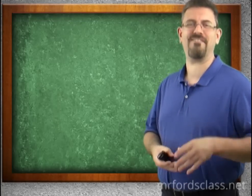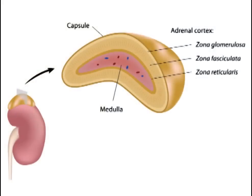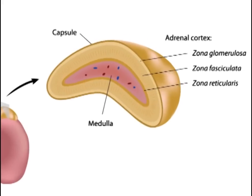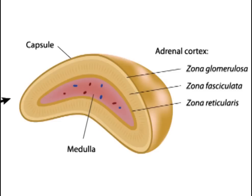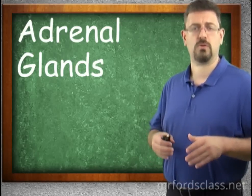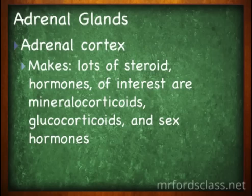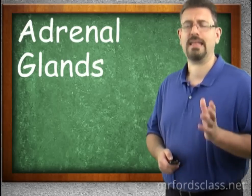Moving on, we have the adrenal glands. These sit on top of the kidneys like little dunce caps — they are pyramid-shaped and encased in adipose tissue. We have two distinct structures: the adrenal medulla and the adrenal cortex. The adrenal medulla is the center of the gland, surrounded by the cortex, and is functionally related to the sympathetic nervous system — it produces and releases epinephrine and norepinephrine, dealing with the fight-or-flight response. The adrenal cortex has three distinct layers: the zona glomerulosa, the zona fasciculata, and the zona reticularis, making steroid hormones including mineralocorticoids, glucocorticoids, and sex hormones.